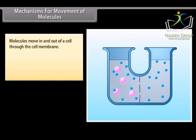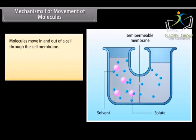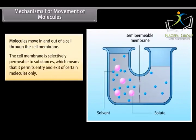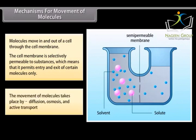Mechanisms for movement of molecules: Molecules move in and out of a cell through the cell membrane. The cell membrane is selectively permeable to substances which means that it permits entry and exit of certain molecules only. The movement of molecules takes place by diffusion, osmosis and active transport.